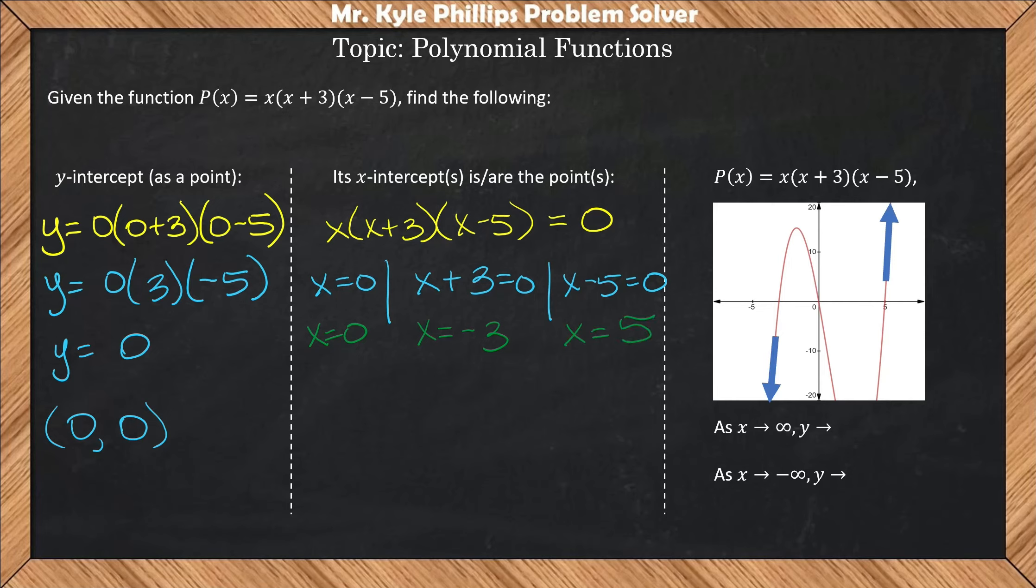So it wants these as points. So we should say (0, 0), (negative 3, 0), and (5, 0).